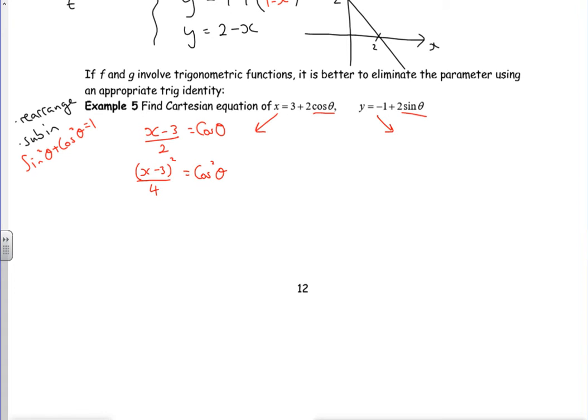If I do the same with this one, I'm going to add on the 1, so it's y add 1, dividing by 2 is sine theta. And then square it. So we've got y add 1 squared over 2 squared, which is 4. So that's going to be sine squared theta. And then if I sub in to sine squared theta plus cos squared theta is 1, then sine squared is y add 1 squared over 4, cos squared is x minus 3 squared over 4. That's equal to 1.